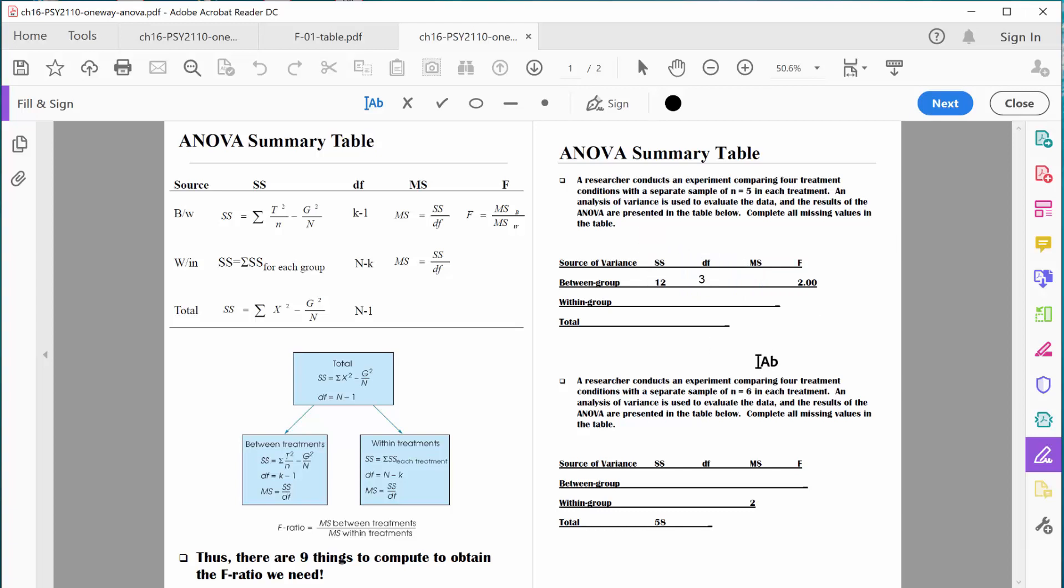Sum of squares equals 12. Remember, mean square between groups is just sum of squares between groups divided by degrees of freedom between groups. In other words, 12 divided by 3, which in this case would equal 4. So let's type that in.